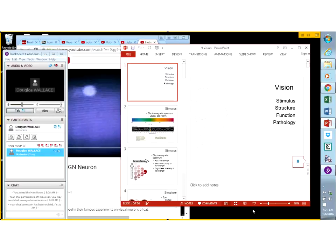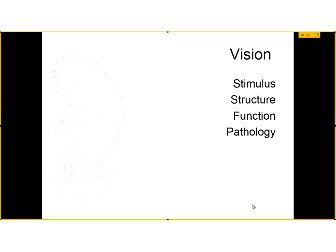Hello and welcome back to Brain and Behavior. We're going to be talking about the visual system today. We'll talk about the stimulus characteristics that the visual system is processing, the structures important for transducing visual stimuli into the neural code, the neural anatomy along different pathways, how neurons process information through those structures, and we'll finish with a little bit of pathology. This is chapter 9, the visual system.